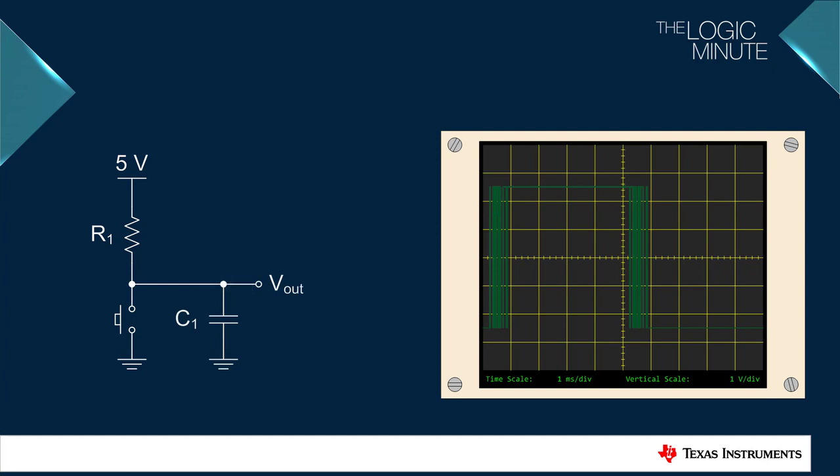Just by adding a capacitor, we have the simplest debounce circuit. This will work in most systems, but we can see that the initial discharge is not slowed at all. So we're really counting on the switch's first bounce to discharge the capacitor fully.